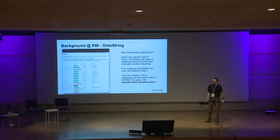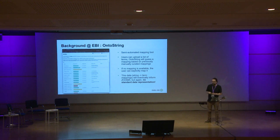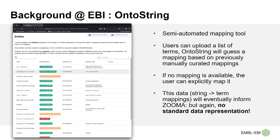More recently we're developing a manual semi-automated mapping tool called Onto String that enables both manual and automated curation. A curator can import terms from CSV into Onto String, and it will predict mappings — it uses Zooma as a data source, uses the Ontology Lookup Service, and guesses a mapping. The curator can then go through and confirm or correct the auto-mapping. Eventually we want this data to inform the mapping so it improves over time, but we don't have a standard data representation to do that.